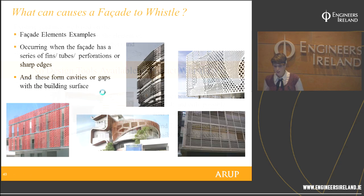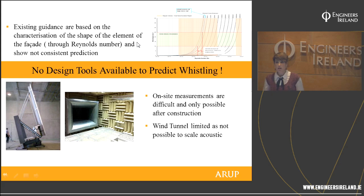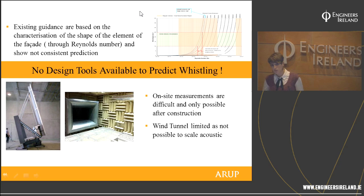There was previously no way to predict this kind of phenomenon at design stage. Most people rely on existing guidance simply based on measurements from buildings already built that generated noise — so they tend to avoid similar facade designs, which is not what the architect wants. Alternatively, you can build a prototype and test it in a wind tunnel, but facades are usually very large and not all facilities can accommodate them.